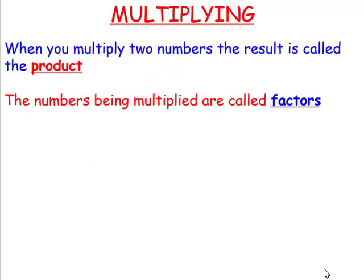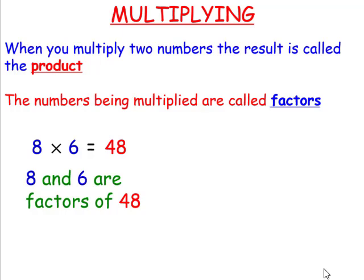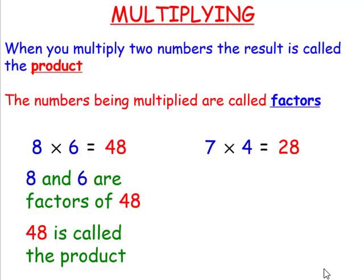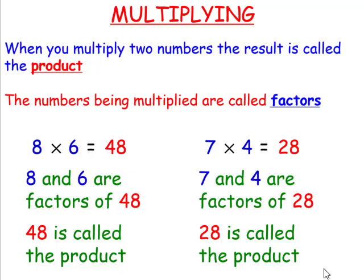When you multiply two numbers, the result is called the product. The numbers being multiplied are called the factors. 8 times 6 is 48. 8 and 6 are factors of 48. 48 is called the product of 8 and 6. 7 times 4 is 28. 7 and 4 are factors of 28, and 28 is the product of 7 and 4.